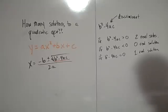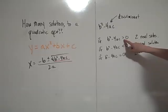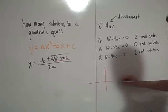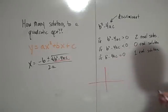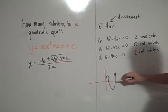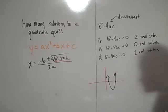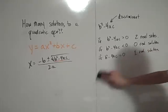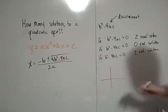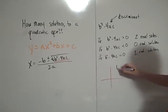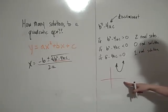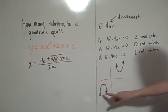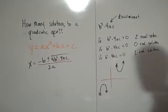You can think about this graphically too. If b squared minus 4ac is bigger than 0, then the graph will end up looking something like this, where it crosses the x-axis twice, and so there are two real solutions. If b squared minus 4ac is less than 0, then the graph of the equation will look something like this, where it never crosses the x-axis. It could open down as well, but either way the graph will never cross the x-axis.